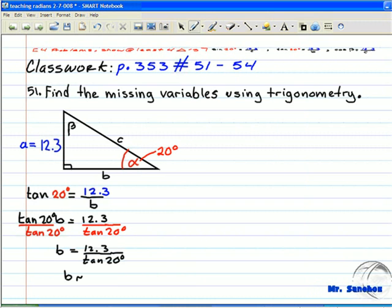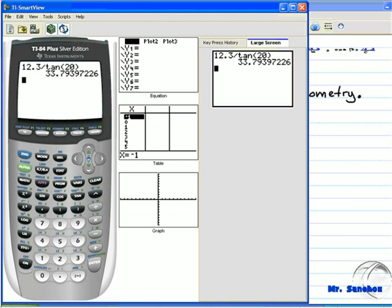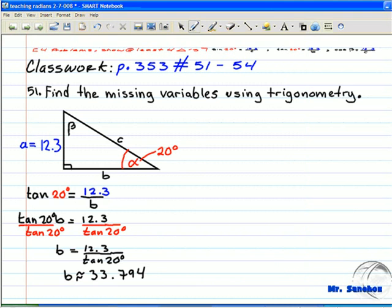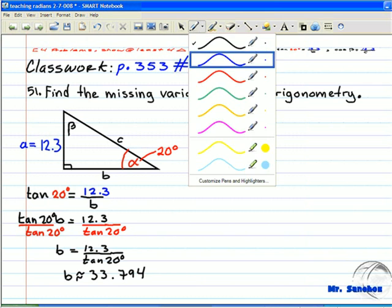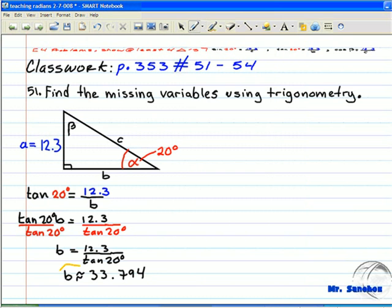Now I'm going to transfer the approximate answer onto my paper. The distance of the adjacent side to alpha is approximately, up to 3 decimals, 33.794. That's one answer. Going alphabetically, we found B.